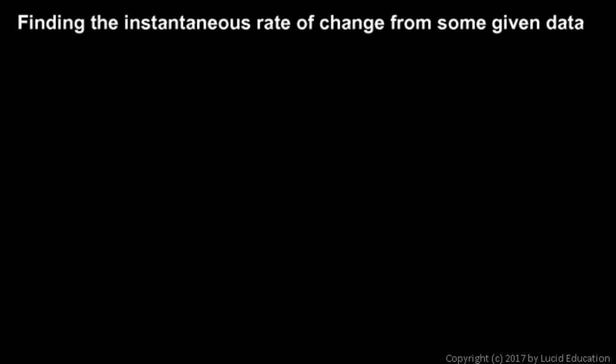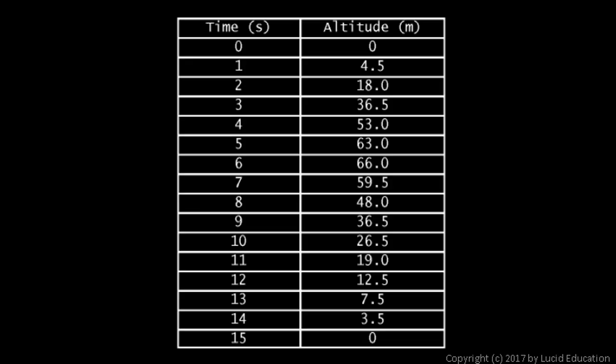We can also find an instantaneous rate of change from some given data, and this is often the case in the real world. We might not have an equation or a graph, but we have some data that's been collected — actual measurements of positions at various times. In this particular case, we're told that a helicopter is being tested, and during the test, data was collected: the altitude of the helicopter in meters at various times in seconds. At time zero it had an altitude of zero.